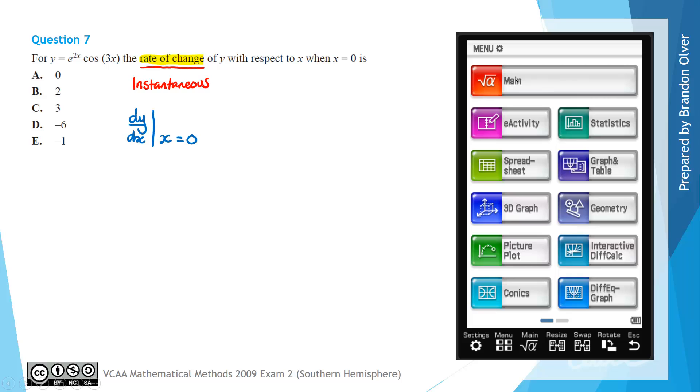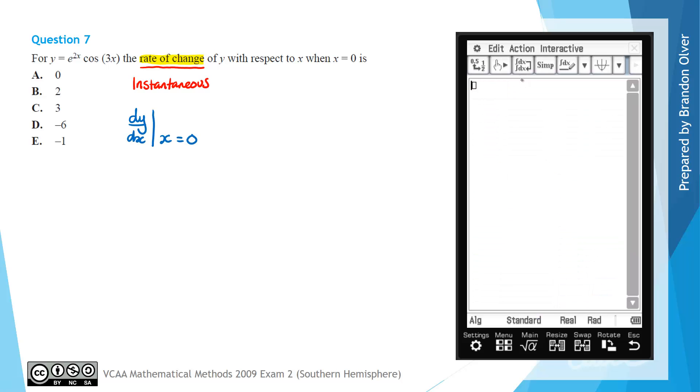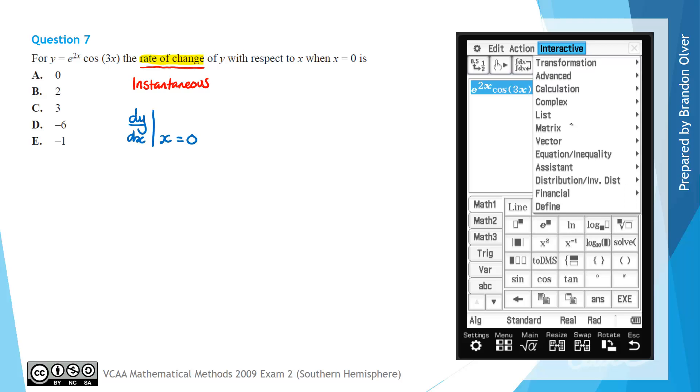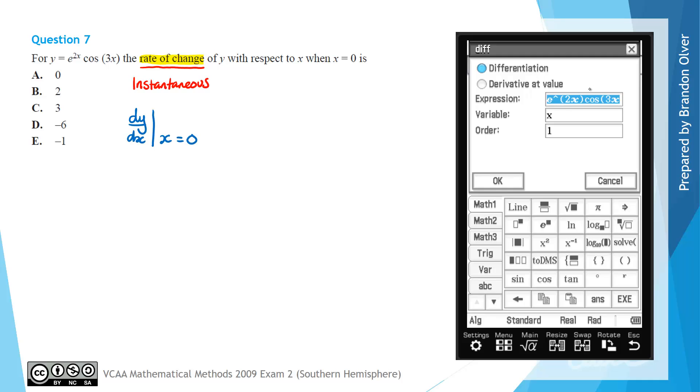On the CAS calculator, go into the main menu. Next, we need to put in the equation that we're given. So that is e to the power of 2x, and then just make sure you're no longer in the power when you write out multiplied by cos of 3x.